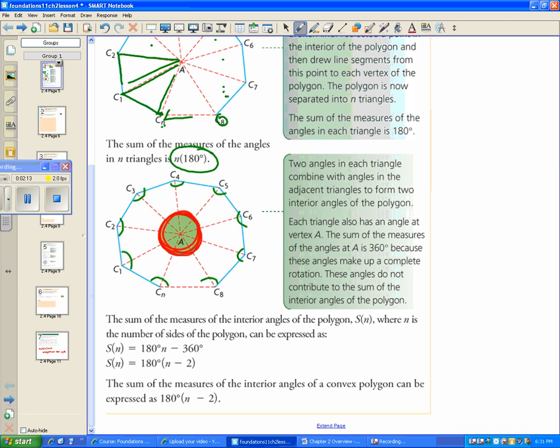Look, all those angles equal 360. So the sum of all my angles in an n-gon, in a shape with n sides, equals 180 times n, minus those 360 that I don't want to count.